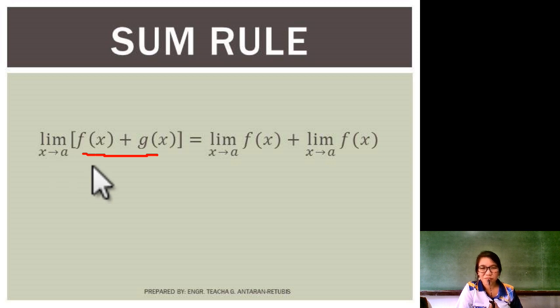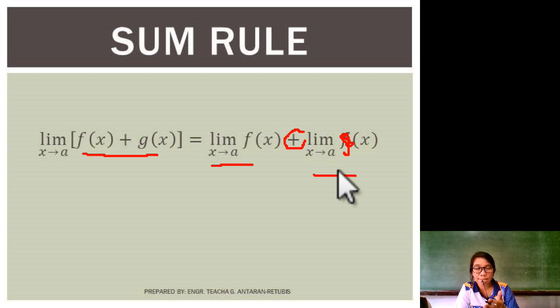Obviously, kukunin mo lang yung limit ng f of x as x approaches a, and then you add it to the limit of - oh by the way, kindly correct this, this is g of x plus g of x. Kindly correct. So whatever their values, the limit of f of x as x approaches a, whatever that value, you add that to the limit of g of x as x approaches a. Simple as that when it comes to addition or sum.